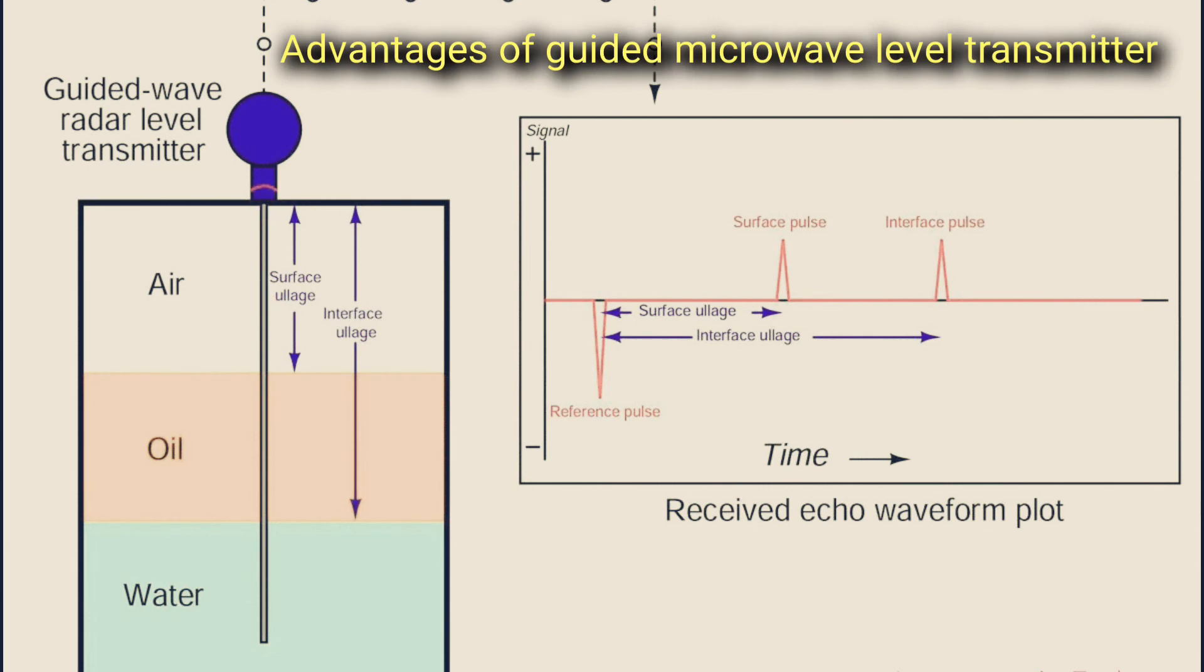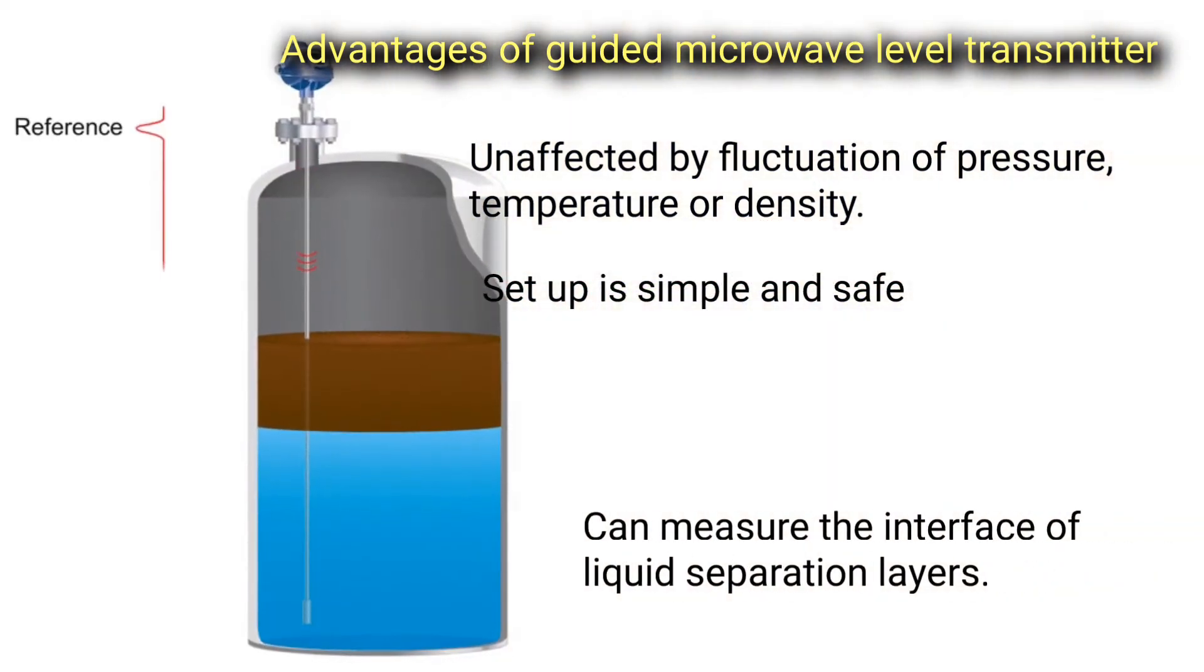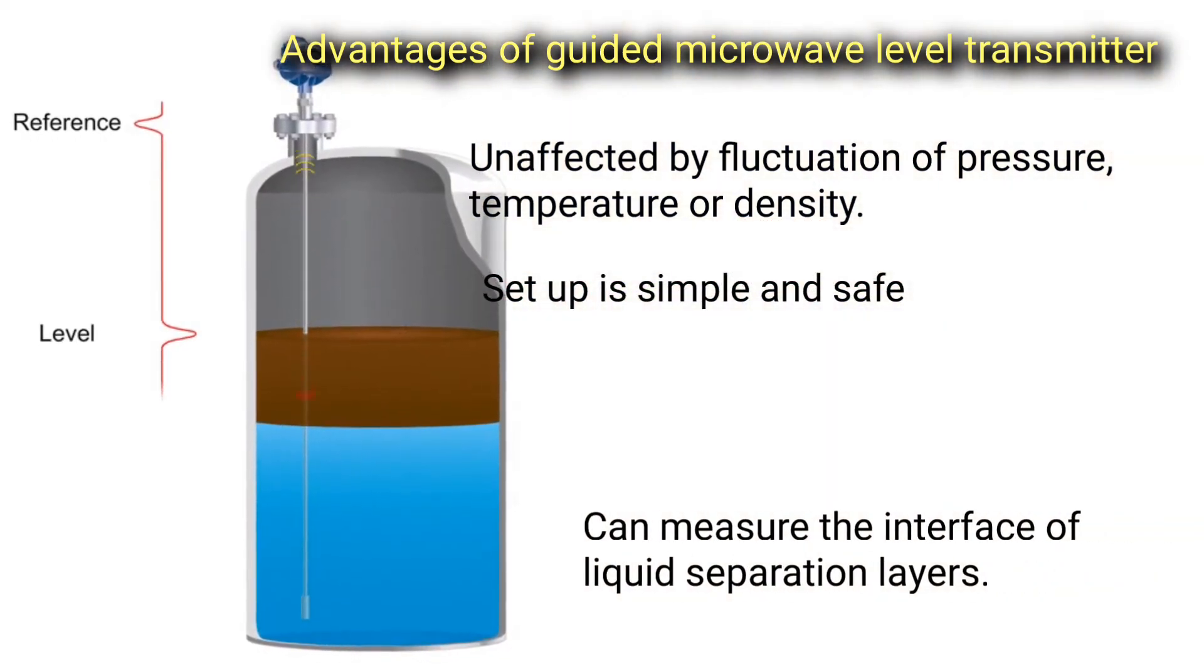Advantages of guided microwave level transmitter: Unaffected by fluctuation of pressure, temperature, or density. Setup is simple and safe. Can measure the interface of liquid separation layers.